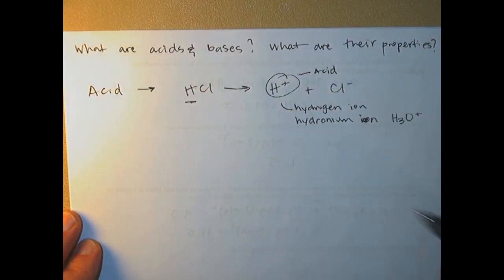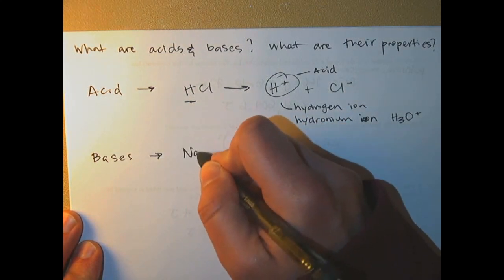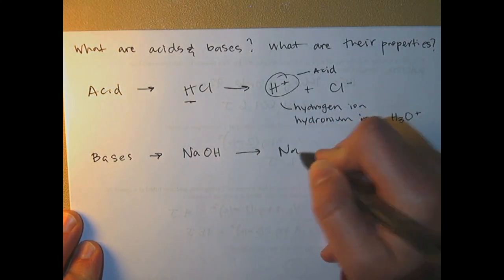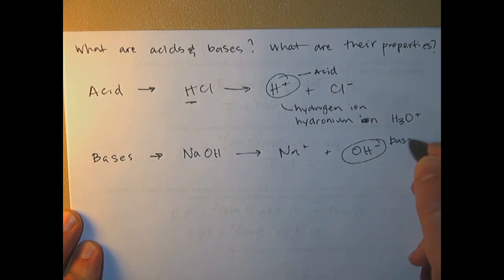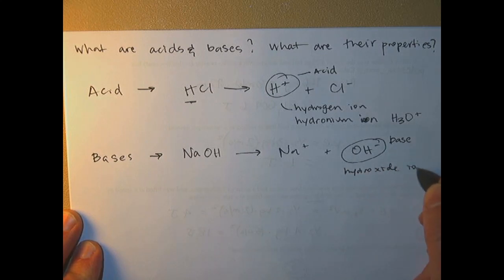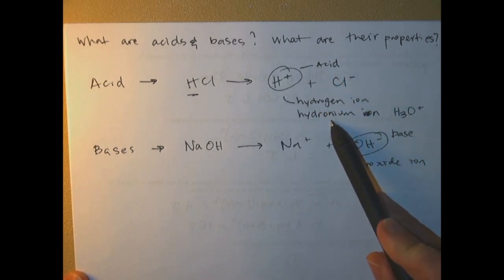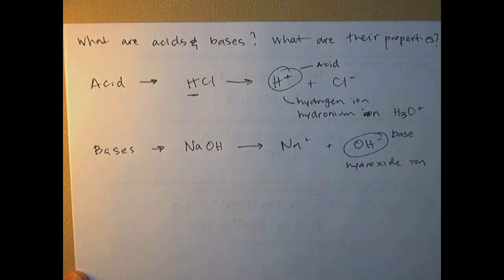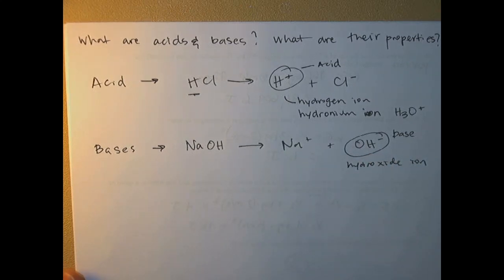Bases have the OH in the formula — like sodium hydroxide. When you put that in water, it breaks apart into sodium and OH-, and this is what makes a base a base. This is called the hydroxide ion. So acids have an H+ — the hydrogen or hydronium ion, sometimes written H3O+. Bases have the OH-, or hydroxide ion.